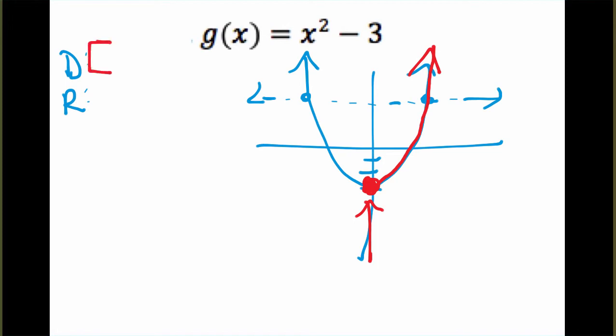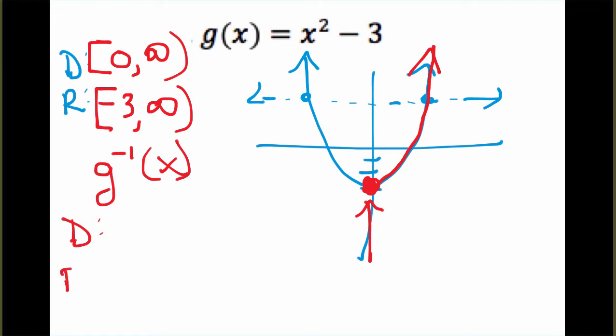I'm going to restrict the domain, and rather than saying my domain is all real numbers or negative infinity to infinity, I'm going to restrict it and start right here so that I can actually find the inverse. My domain is going to go from zero to infinity. The range should still include all of the values on the range of the original function. Our lowest value is negative three, and the highest is infinity.